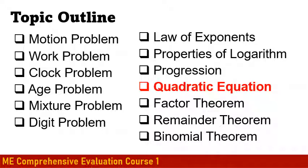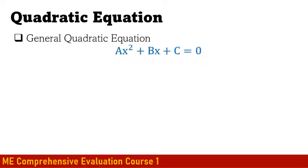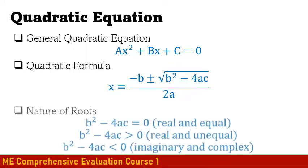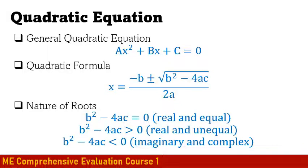Now let's proceed to the quadratic equation. The general quadratic equation is ax² + bx + c = 0, solved using the quadratic formula. The nature of the roots is determined by the discriminant (b² − 4ac): if equal to 0, roots are real and equal; if greater than 0, roots are real and unequal; if less than 0, roots are imaginary or complex.